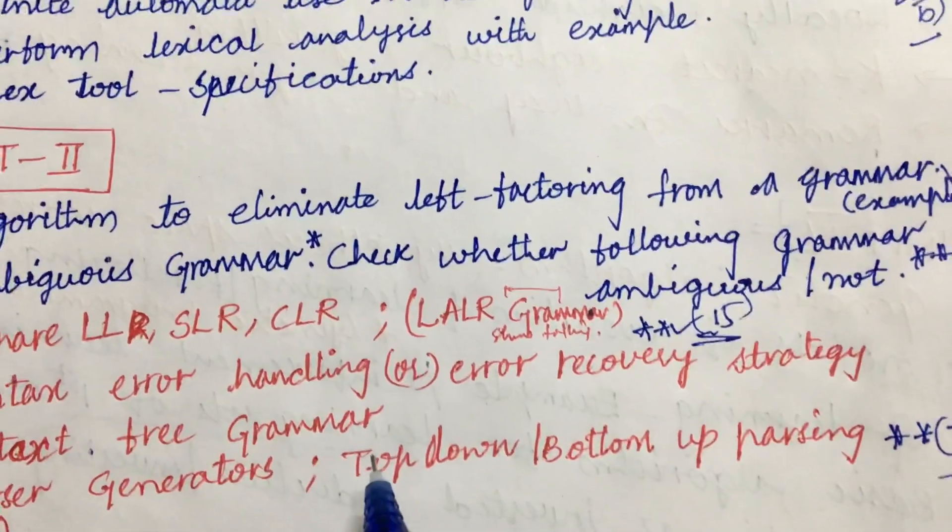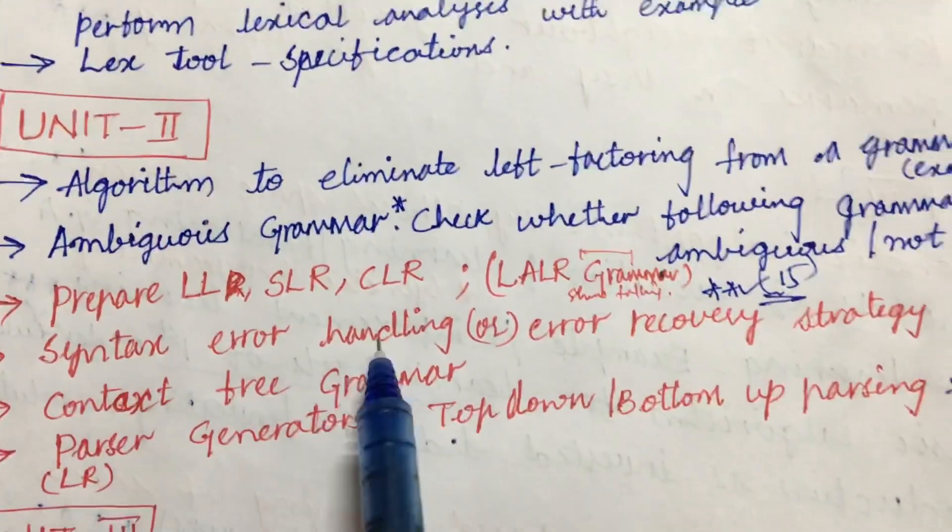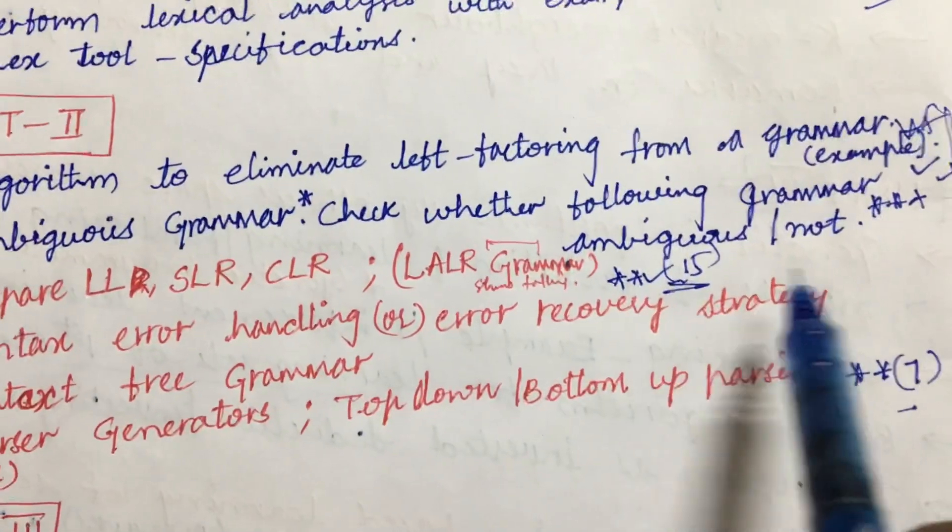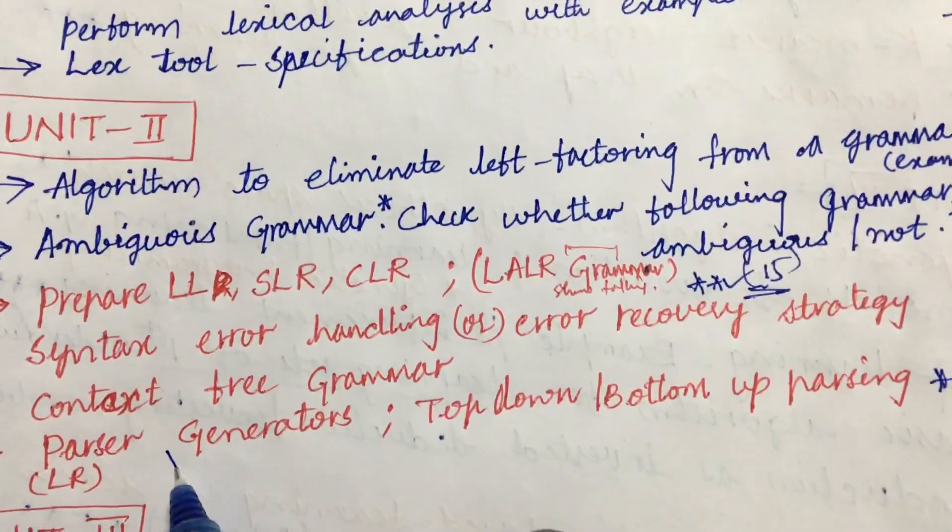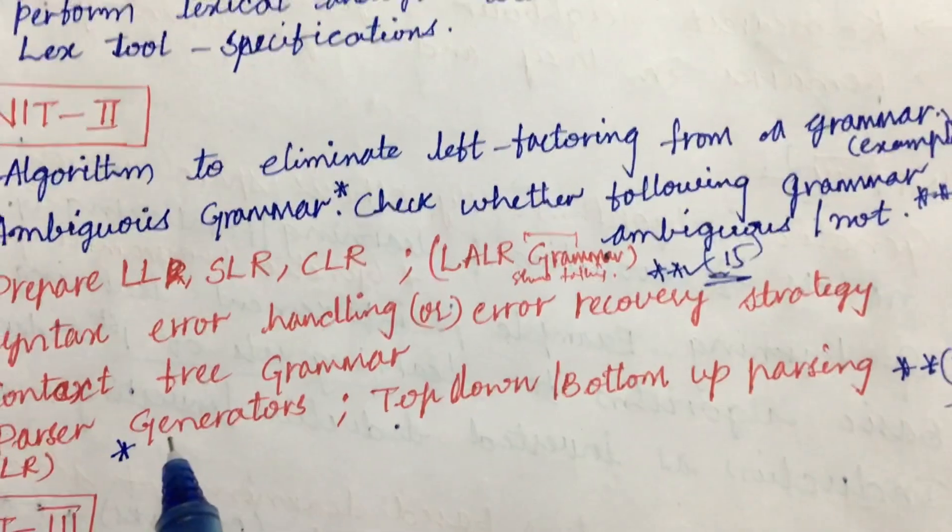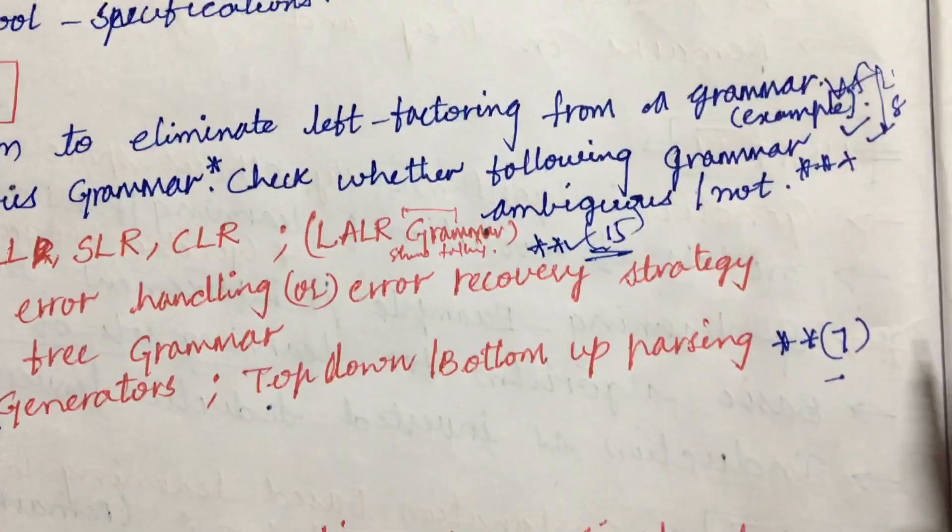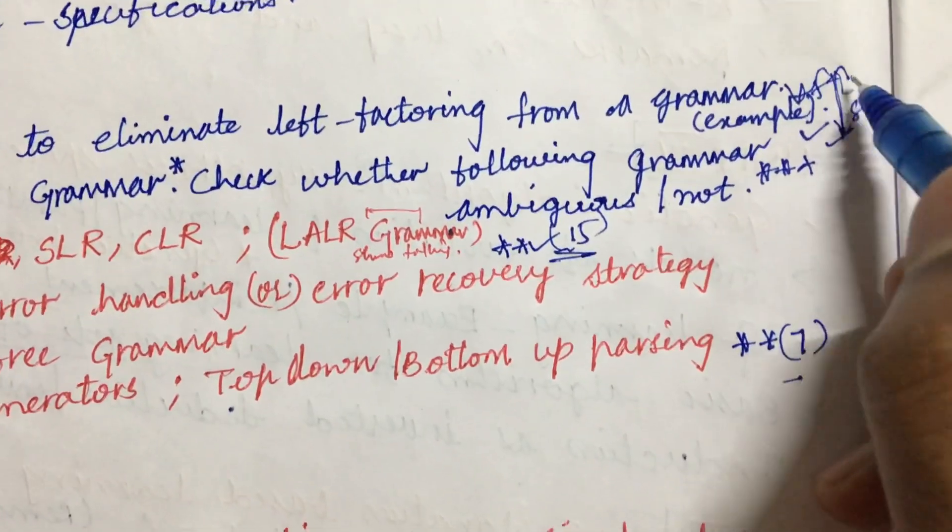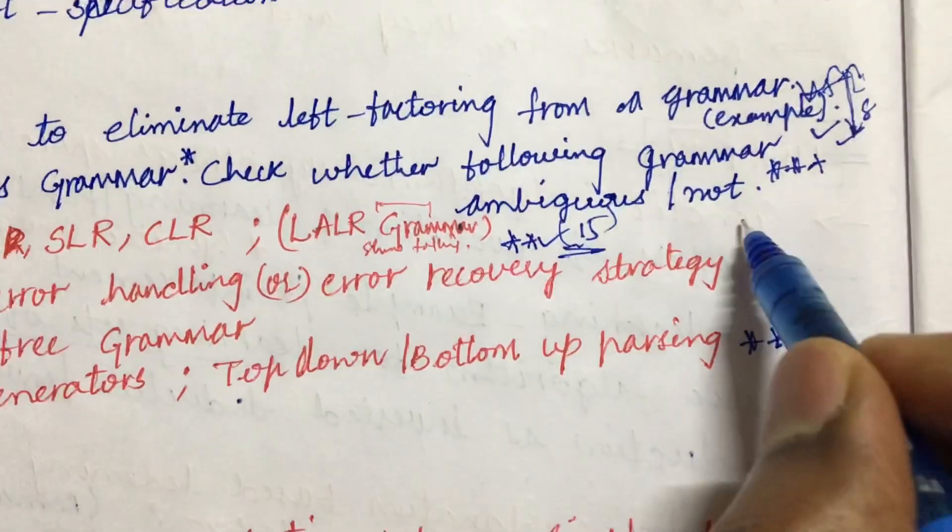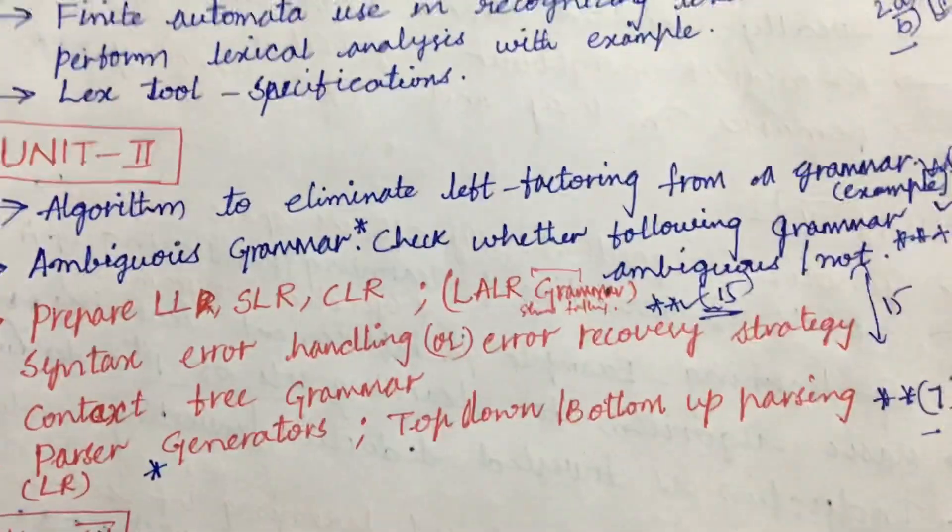Later, syntax error handling or error recovery strategy and context-free grammar and parser generators is very important and a gunshot question. Top-down and bottom-up parsing may also be asked - it is asked several times. Again, we can expect from this 8 marks and 7 marks, and from this topic we can expect directly a 15-mark question. Dear students, this is all about the second unit.